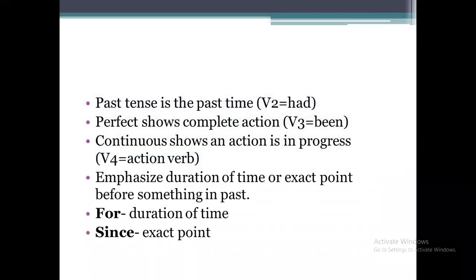Before going towards the definition of Past Perfect Continuous Tense, let's discuss each term individually. The very first one is 'past,' which shows that this is the past time. The second is 'perfect,' which shows that the action is completely done. And the third term is 'continuous,' which shows that an action is in progress — that is, continually being done by a person.